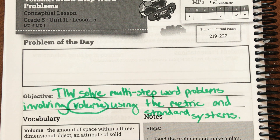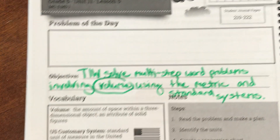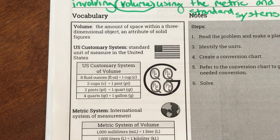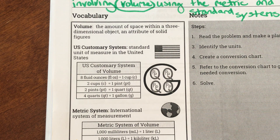You've done volume this year when solving how much could fit inside a rectangular prism, and your formula for that was volume equals length times width times height. We are talking about a little bit different type of volume now. We're not going to be talking about rectangular prisms where the answer is cubed. We're going to be talking about more like liquid volume. Our vocabulary says volume is the amount of space within a three-dimensional object, an attribute of a solid figure. Now we're going to be talking about containers that hold liquids.